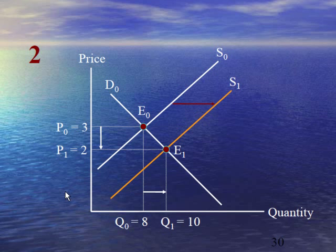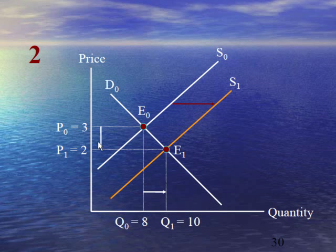Case number 2 assumes that there is no change in demand curve, no shift in demand curve — only supply increases. When there is an increase in supply, the equilibrium point will shift from E₀ to E₁. At this new equilibrium point, we can notice the decrease in equilibrium price from 3 to 2 and the increase in equilibrium quantity from 8 to 10.